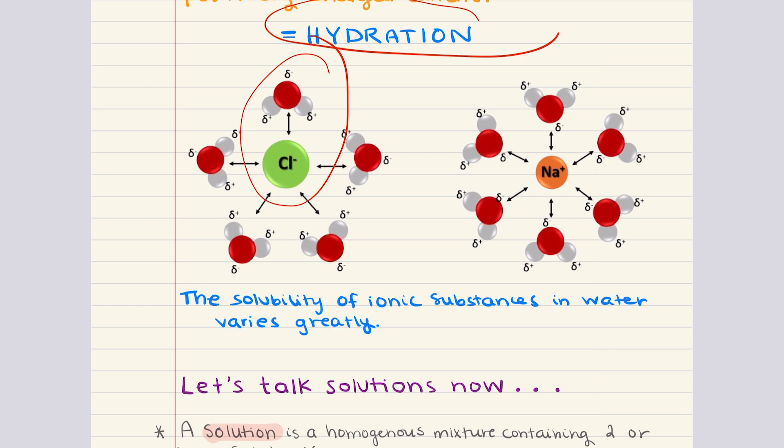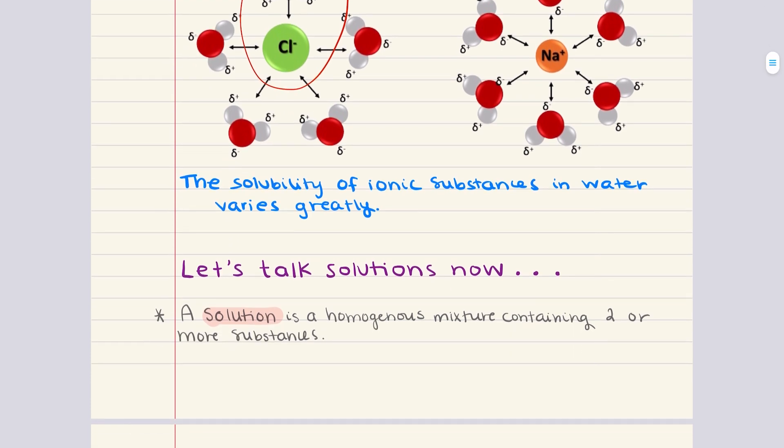Of course, it's important to point out here that the solubility of ionic substances in water varies greatly. So, for example, sodium chloride is quite soluble in water, whereas silver chloride is only very slightly soluble. The differences in the solubilities of ionic compounds in water typically depends on the relative attractions of the ions for each other versus the attractions of the ions for water molecules. And we're going to get into that in a lot more detail in this chapter. But essentially, understanding these properties of water sets the stage for exploring solutions and the chemical reactions that occur within them.